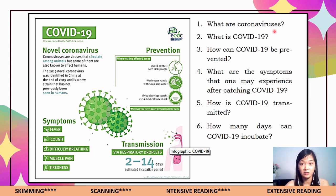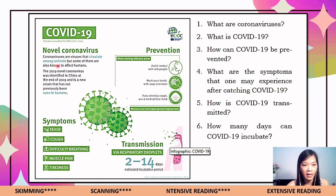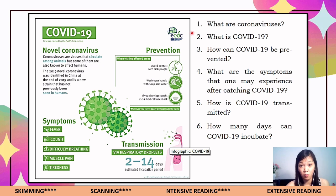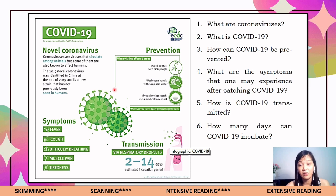You are going to answer these questions based on the given infographic. By simply looking and scanning the infographic, you can find the answers. For example, coronaviruses are viruses that circulate among animals, but some of them are also known to affect humans — this text could be the answer to question number one. Simply study, scan, and read the given infographic to answer the other questions.